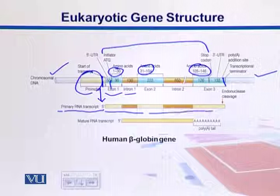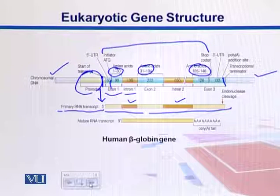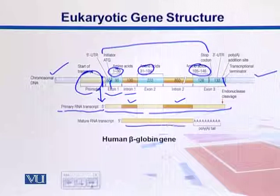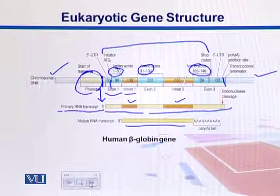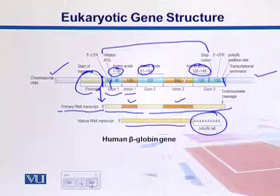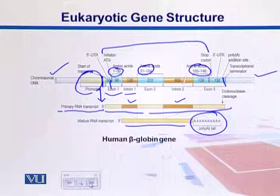The primary transcript contains those introns, which are later removed through a process called splicing, and then we find a mature RNA transcript. That mature transcript is then translated into proteins. This mature messenger RNA transcript is also recognized by the presence of a poly-A tail — a long run of A's at the end, called the poly-A tail.